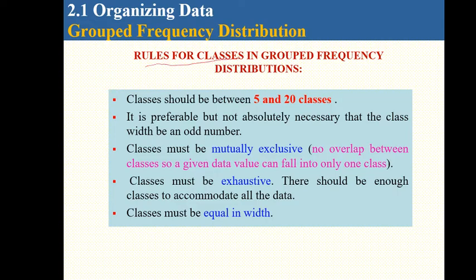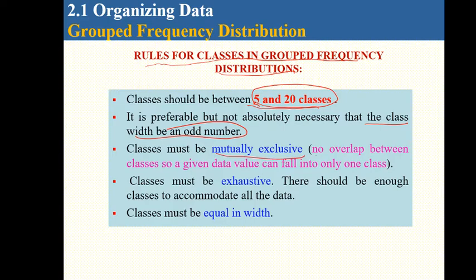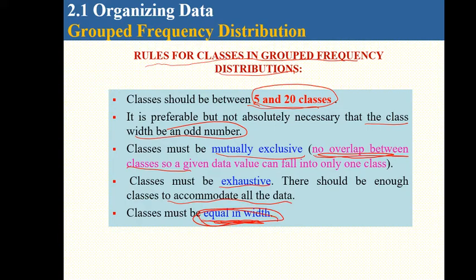Rules for classes in grouped frequency distribution: the number of classes should be between 5 and 20, and it's better for the class number to be odd. Classes must be mutually exclusive — no overlap between classes. Classes must be exhaustive — they should contain all the data and nothing left out. Classes must all have the same width.